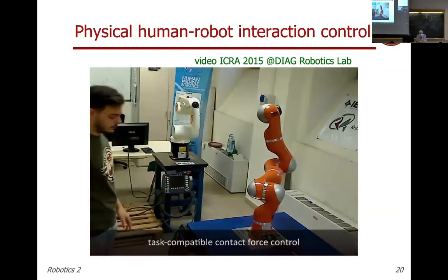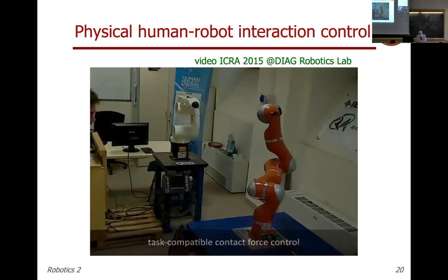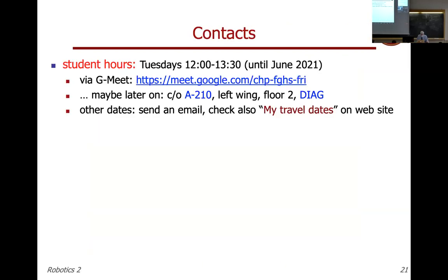These are elementary building blocks for possible applications — for example, a bimanual robot holding an object: without sensorizing everything, you can feel contact forces and understand whether you are grasping the object firmly. There are many things that can be done with this technique, even without the human.